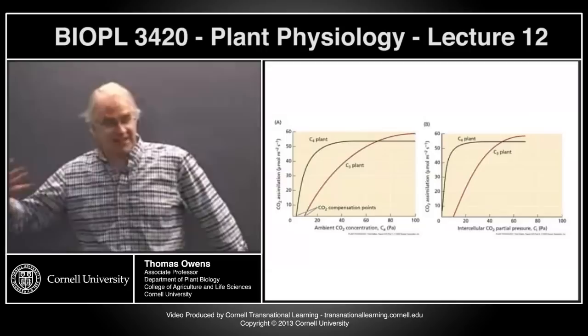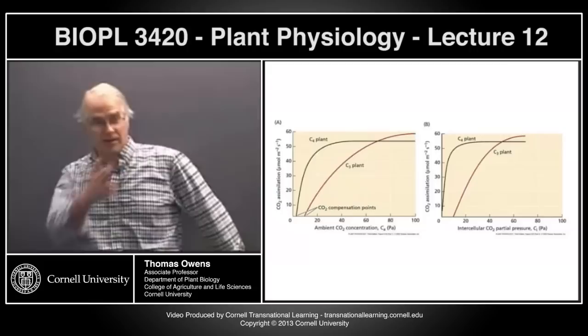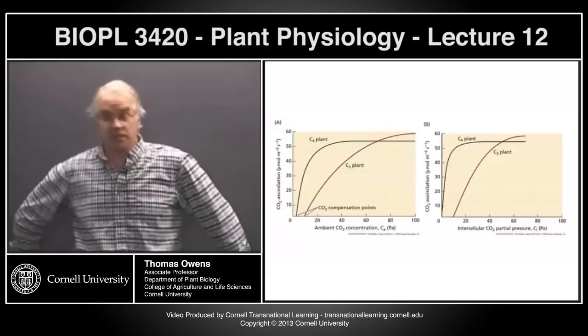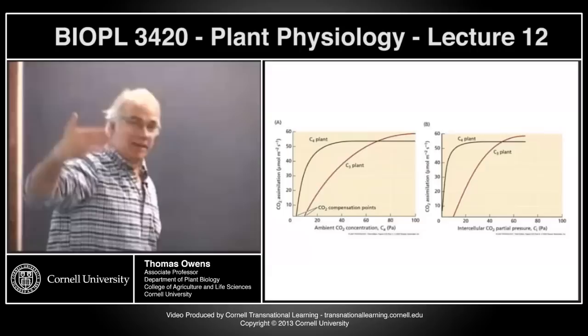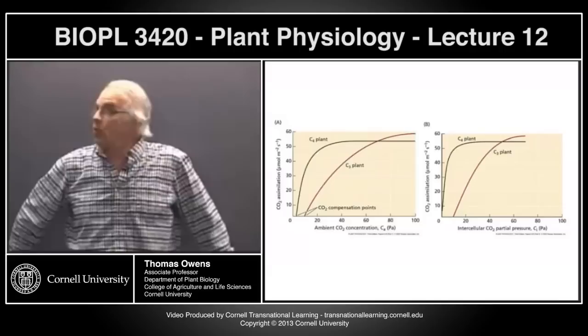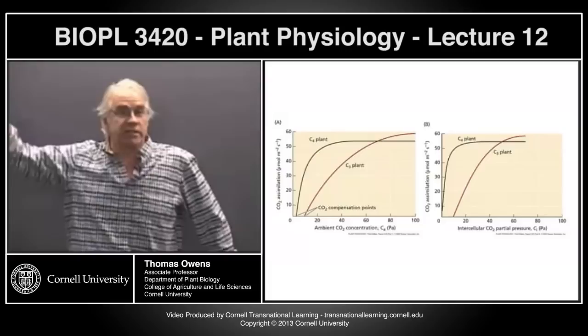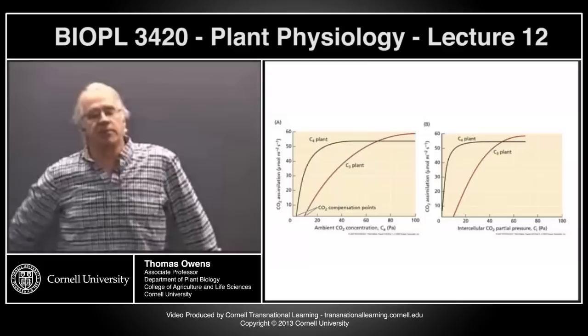What does the C4 plant have to do that C3 plants don't have to do? C3 plants do photorespiration, but how much photorespiration is going to go on at high CO2? Not a lot. So why does the C3 plant do better than the C4 plant under conditions of high CO2 and no photorespiration? What does the C4 plant have to do all the time that the C3 plant doesn't?